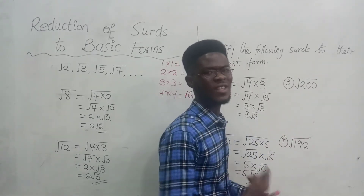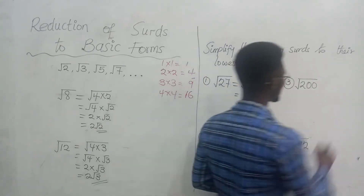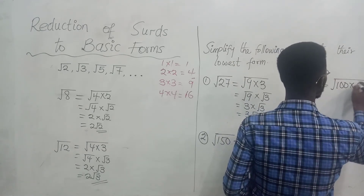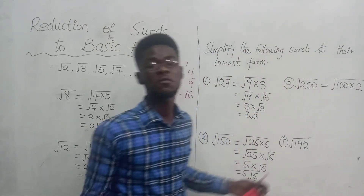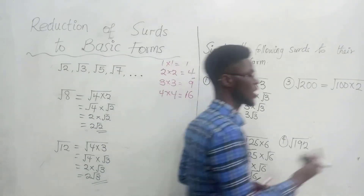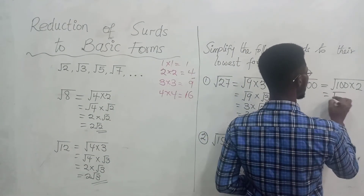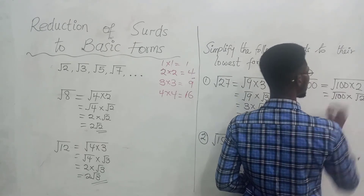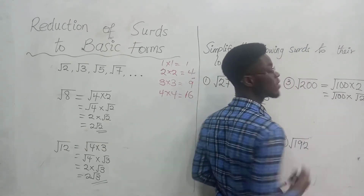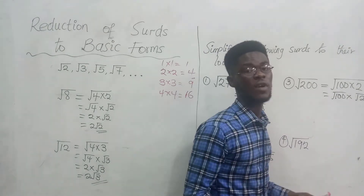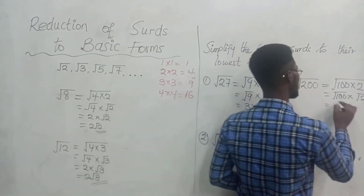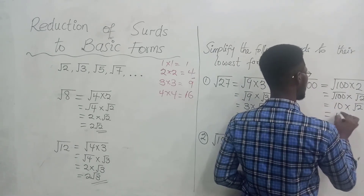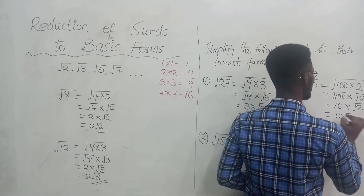This one is the square root of 200. The two numbers are 100 and 2. 100 times 2 gives me 200, and 100 is the perfect square. Each of them picks the square root sign: square root of 100 times square root of 2. The square root of 100 reduces to 10. So this gives me 10 root 2.